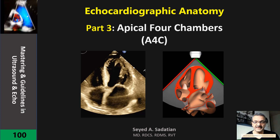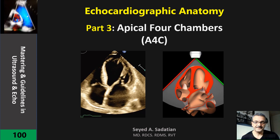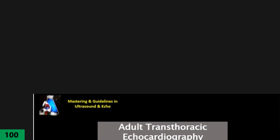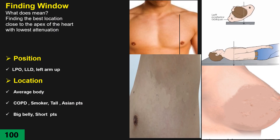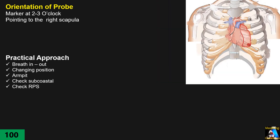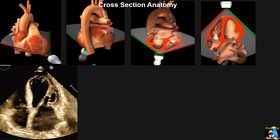Welcome to Mastering Guidelines in Ultrasound and Echo. In this clip you will learn how to find the apical four-chamber view — the location, position, and orientation of the probe — and how to approach it practically from basic to advanced cases.